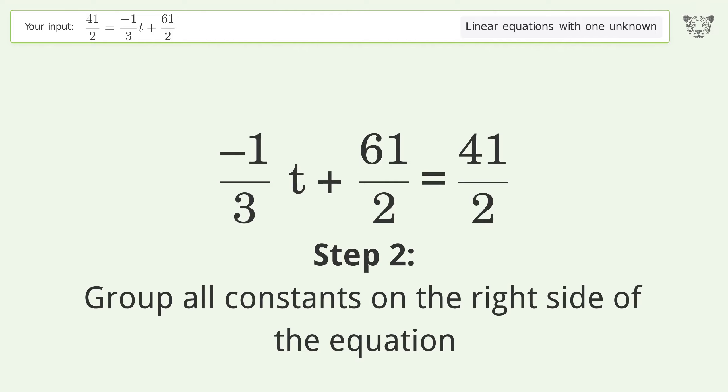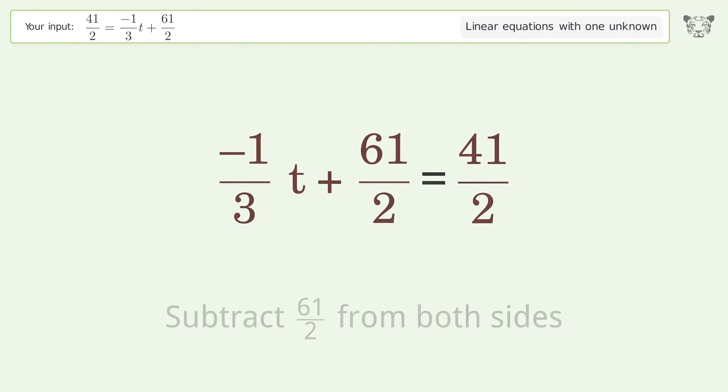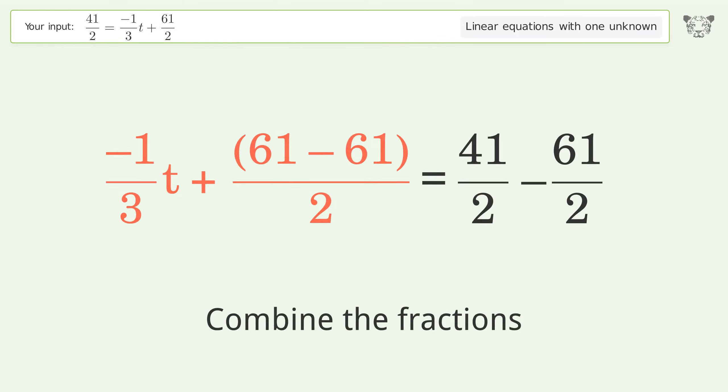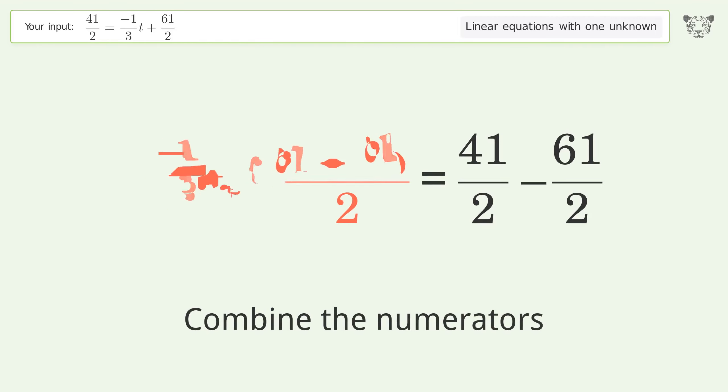Let's solve it step by step. Swap sides, group all constants on the right side of the equation. Subtract 61 over 2 from both sides, then combine the fractions.